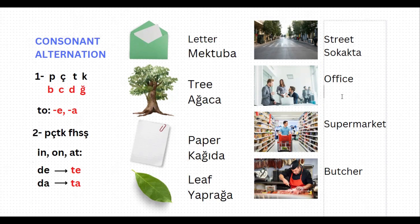Here is another word: 'office,' which is 'ofis' in Turkish. If you want to say 'in the office,' it should be 'ofis-de,' but this word is ending with s, which is one of peçeteğe or fehseşe, so this suffix alternates and becomes 'ofiste.' In the office: ofiste.